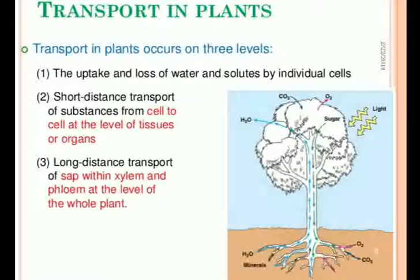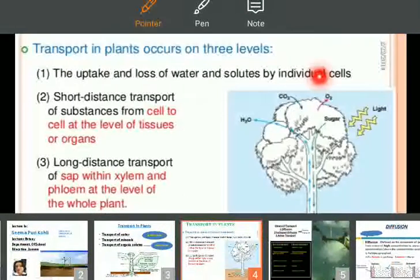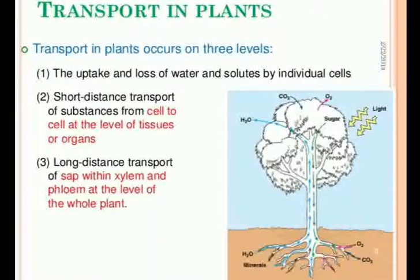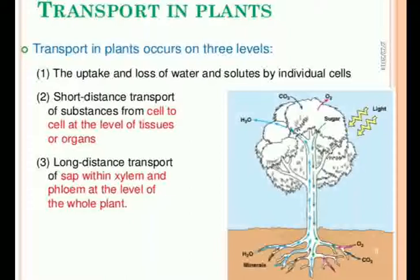Transport in plants takes place by two methods: the uptake and loss of water and solutes by individual cells. When any plant part undergoes movement of minerals, the mineral nutrients are taken up by the roots and transported upward into the stem, leaves, and growing regions. During senescence — the dying out of a particular plant part — nutrients may be withdrawn from those regions and moved to the growing parts.